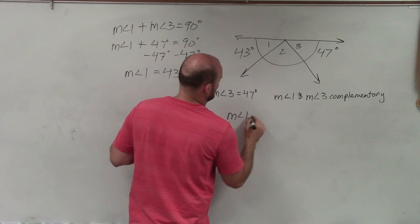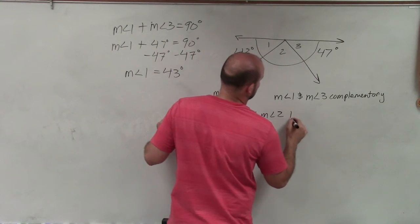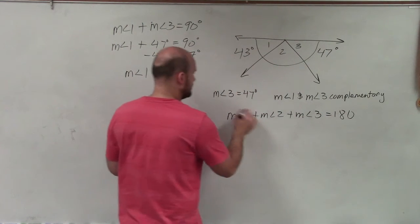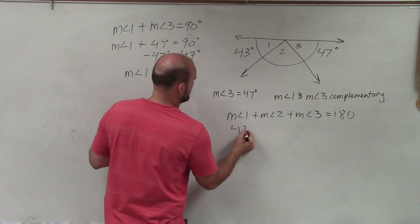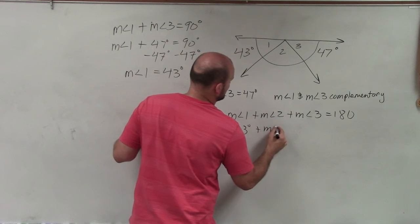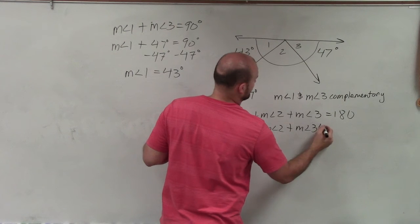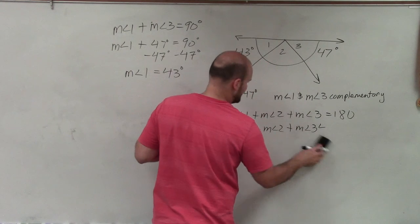So I can say the measure of angle 1 plus the measure of angle 2 plus the measure of angle 3 equals 180 degrees. Well, I know measure of angle 1, which is 43 degrees, plus the measure of angle 2, which I do not know, plus the measure of angle 3, which is 47.